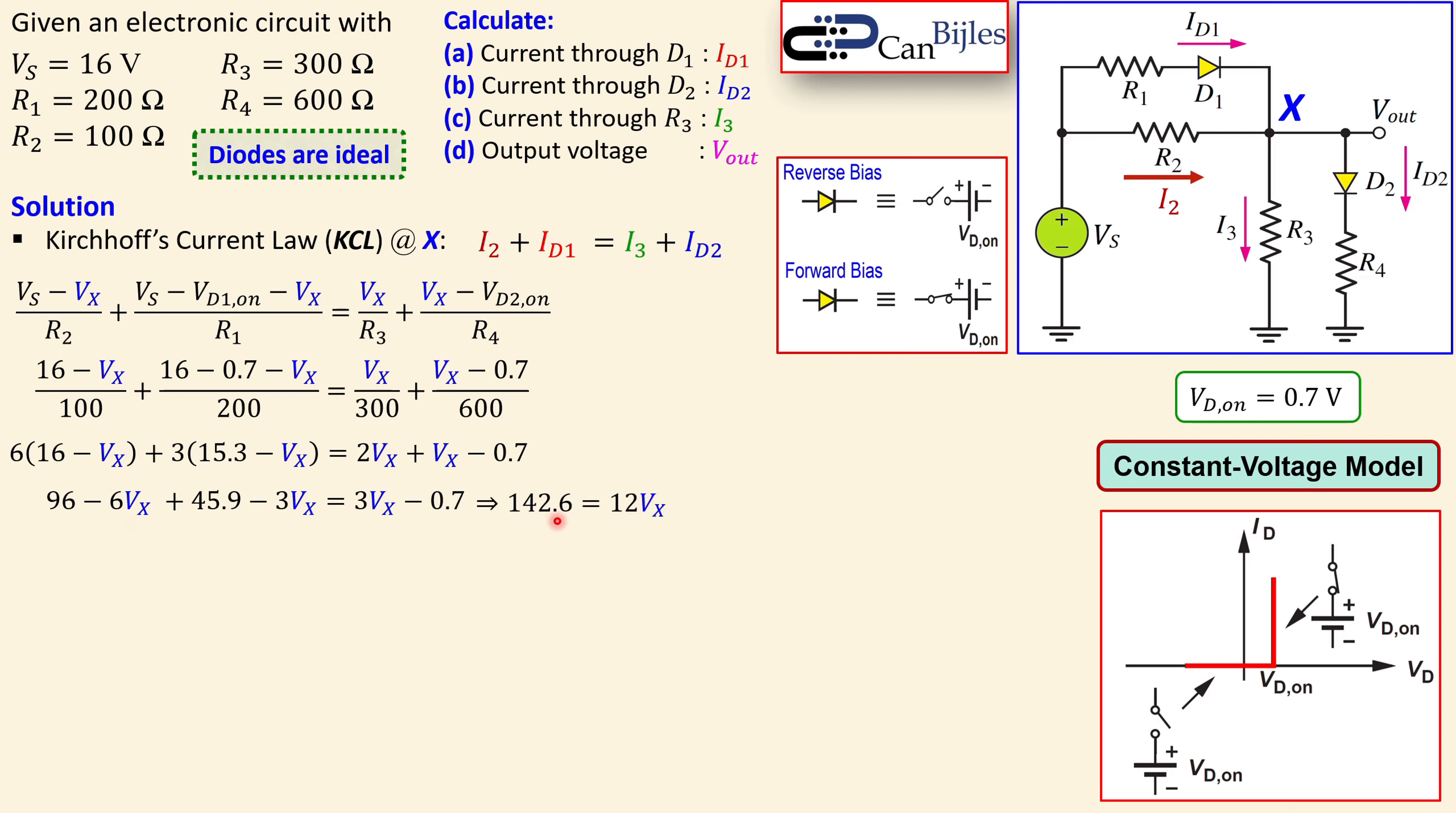The Vx will be then 142.6 over 12, that will give me 11.88 volts. So the Vout is also 11.88 volts because that is this node. So then we have the Vout is exactly Vx, which is 11.88. That is the answer to question D.